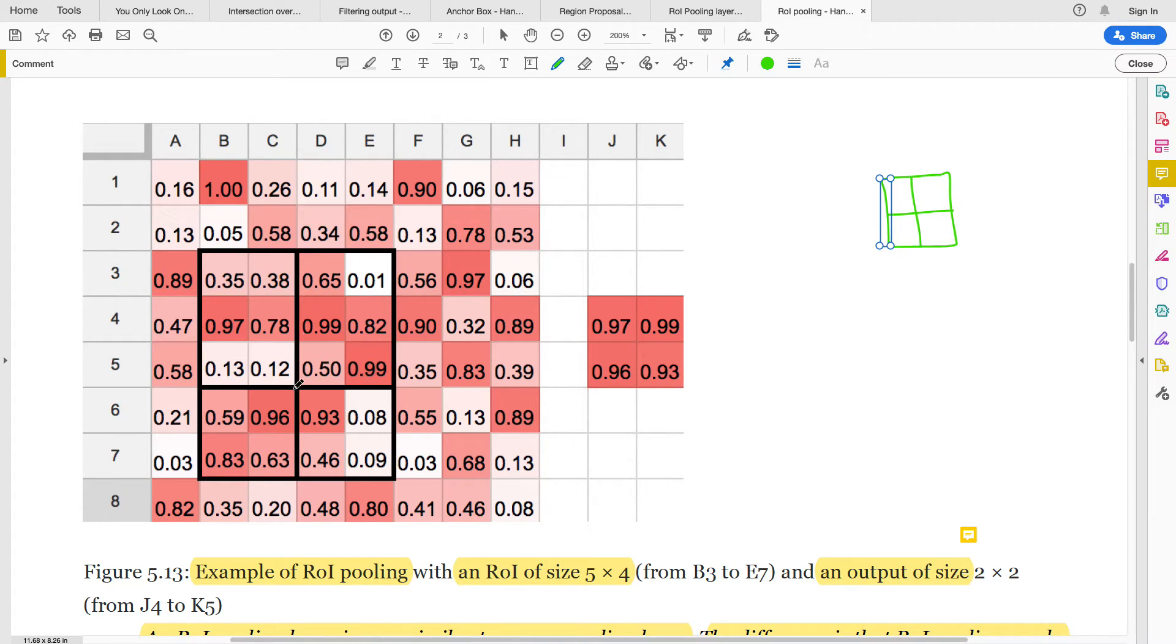Then we can now begin to take our max pooling. We take the highest number in this cell, we take the highest number in this cell, we take the highest number in this cell, and we take the highest number in this cell. This gives us 2 by 2.